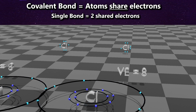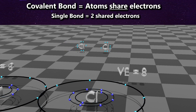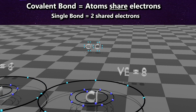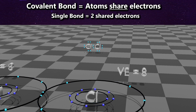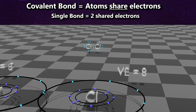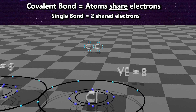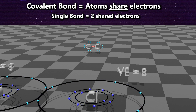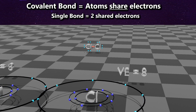Looking at the Lewis dot structure, this shows pretty clearly that two electrons are shared in the middle, and if we count those two electrons for both atoms, they both have 8 surrounding them. We symbolize the single bond with a bar in the middle.